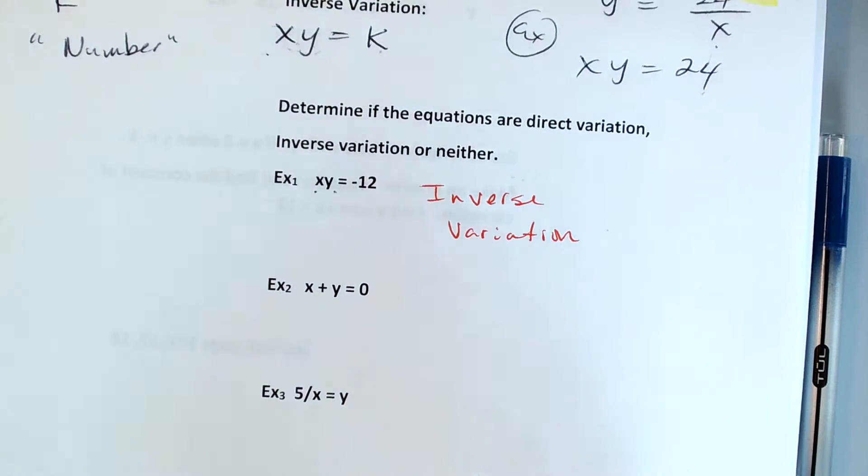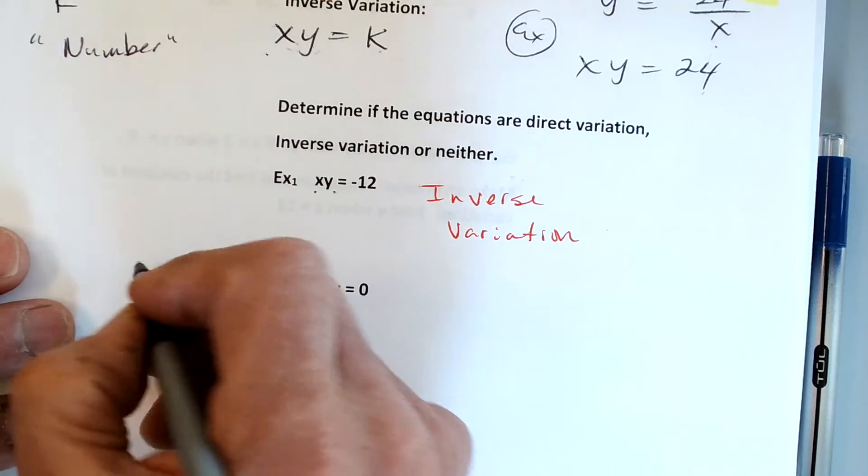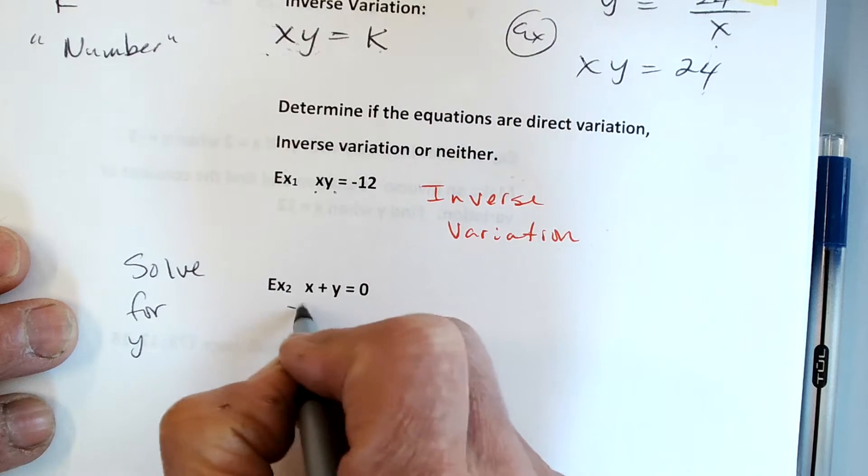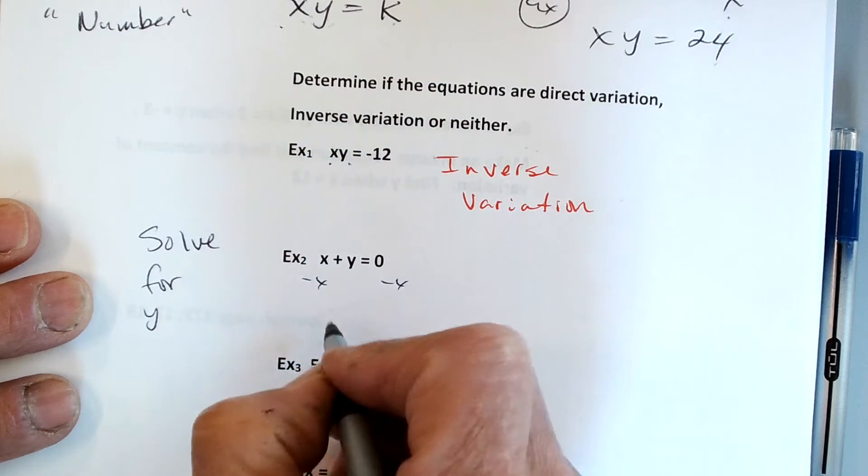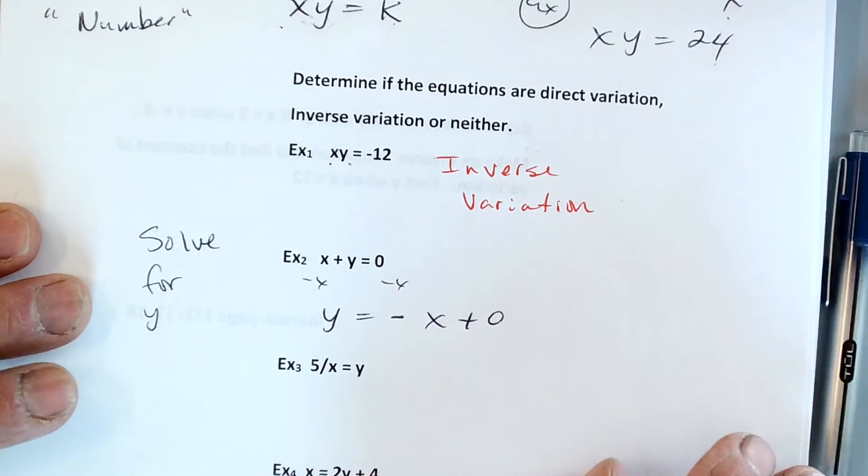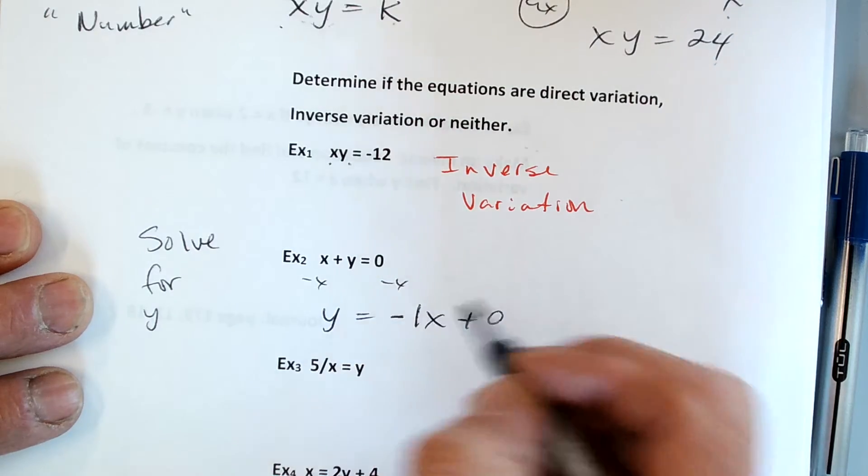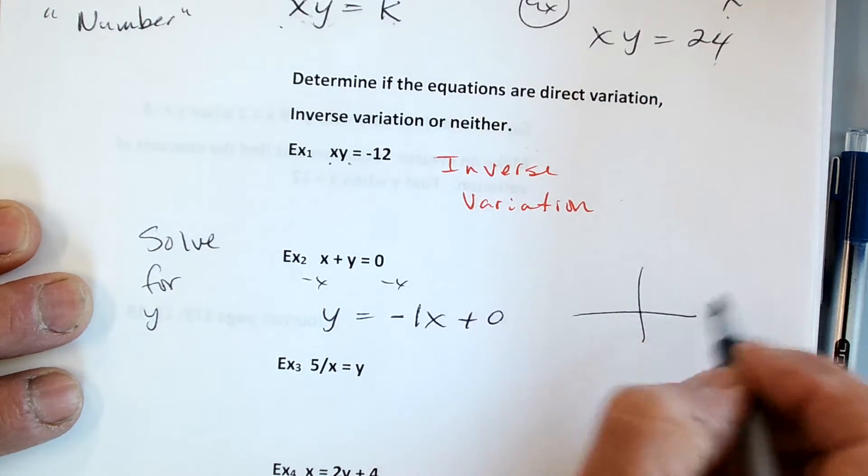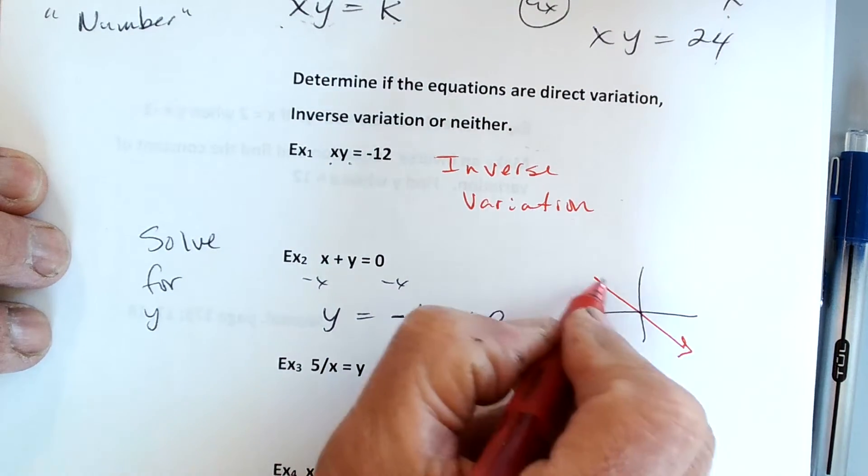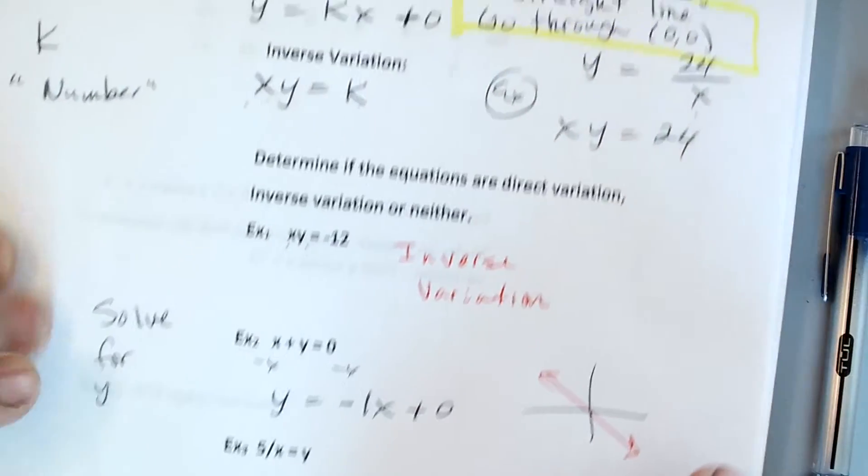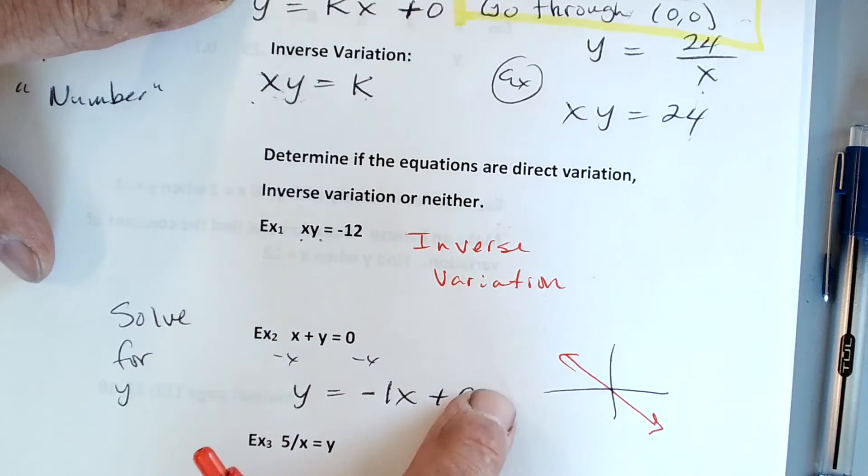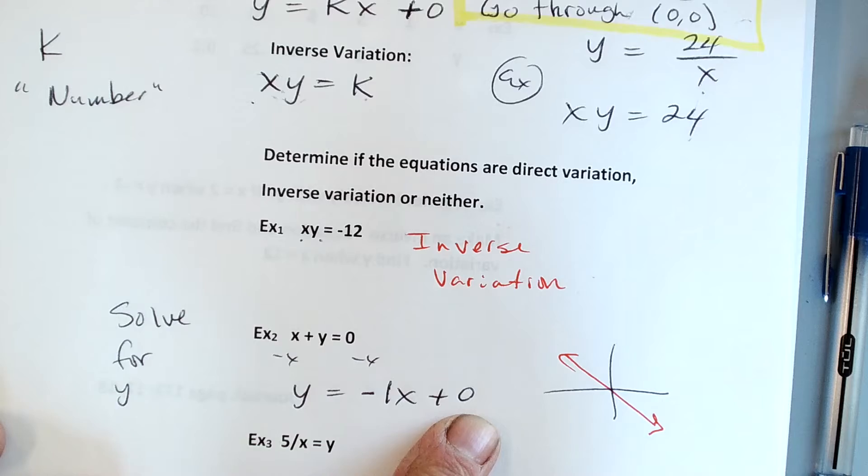Example 2 is a little bit tricky, but I might solve for y. If I solve for y, minus x, I get y equals negative x plus 0. If I were to graph this, it looks just like that. Start at 0, down 1 over 1. That one's got to be a direct variation because it's straight and it goes through 0, 0.